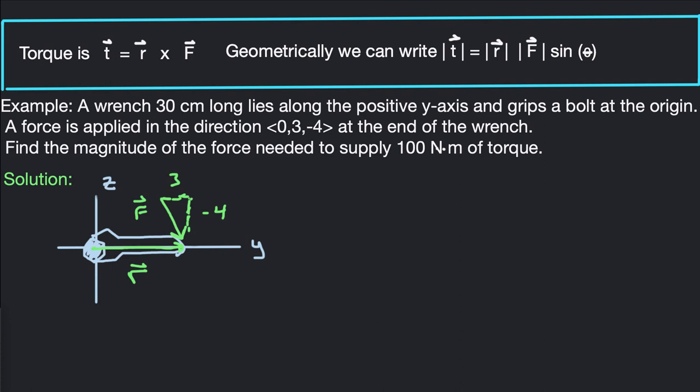It says a wrench 30 centimeters long lies along the positive y-axis and grips a bolt at the origin. A force is applied in the direction of this vector, 0, 3, negative 4, at the end of the wrench.